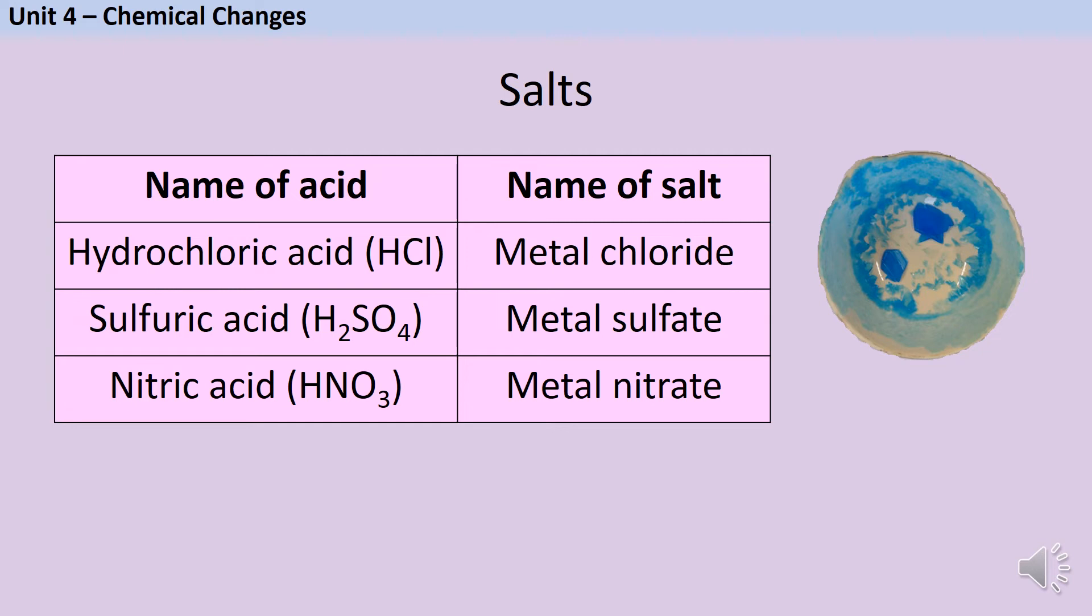When hydrochloric acid reacts with any metal or base, it makes metal chlorides, like tin chloride or iron chloride. When sulfuric acid reacts, it makes sulfates, like this blue copper sulfate here.